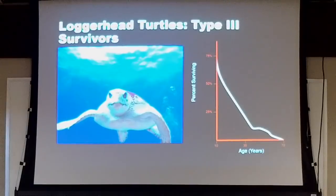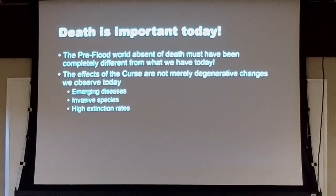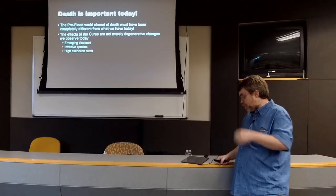Simple example here, loggerhead turtles. These are type 3 survivors. That means, generally speaking, mortality is highest at young ages. So we have a very high mortality rate when they're very young, and it goes down gradually as they get older. So that the oldest members of the population are, in fact, the fewest in number. But if you imagine a loggerhead turtle doing what it usually does, producing enormous numbers of eggs, you've all seen those nature shows where turtles crawl up on the beach and lay giant pits of eggs. Imagine if all of those survived. In just 10 generations, the world would be overrun with 900 quadrillion sea turtles. Obviously, not a real sustainable situation. So death is important. That should say the pre-fall world. The pre-fall world, absent of death, must have been completely different from what we have today.